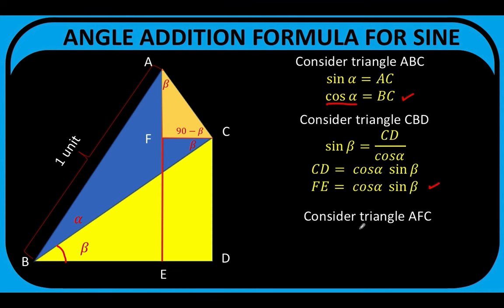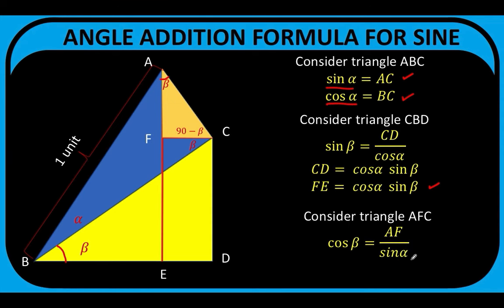Next, let's consider triangle AFC — the small right triangle at the top. With respect to the angle with measurement beta, the cosine of beta is equal to the length of segment AF over the hypotenuse AC, which we know equals sine alpha. So we have the ratio AF over sine alpha. Multiplying both sides by sine alpha and applying the symmetric property of equality, we arrive at AF equals sine alpha cosine beta.